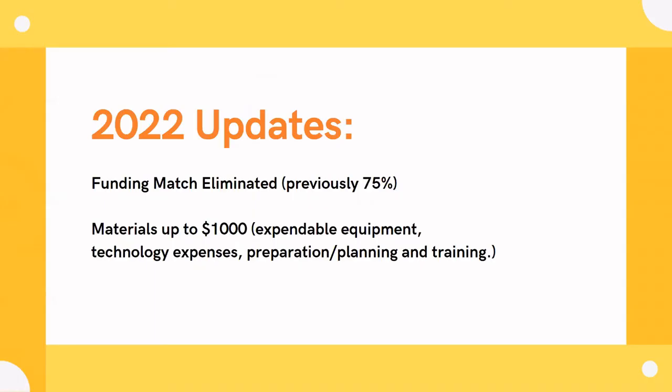Some funding updates: in the past there was a 75% funding match requirement, but that is no longer the case — this grant can now cover 100% of your project budget. If you are receiving external funding from other grants or sponsorships, please document that in your budget sheet. Also new: you can include materials up to $1,000, covering expendable equipment, technology, and preparation or planning and training, including administrative fees.